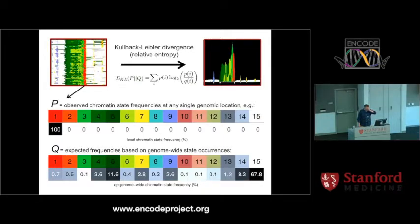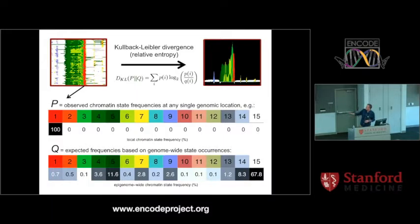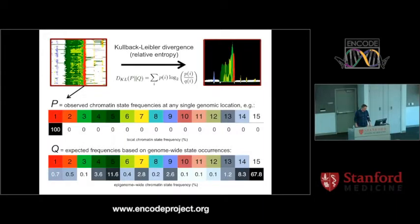We're also developing more complex models that take into account similarities and expected co-occurrences between chromatin states, as well as similarities between different samples. For example, if you're building this based on 20 T-cell samples and one brain cell sample, you kind of want to weigh those samples differently and not put too much weight on the T-cell samples. That's stuff we're developing — that's the general concept.